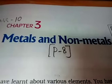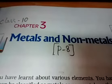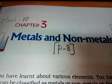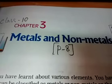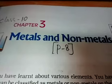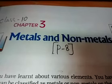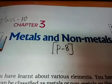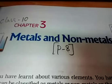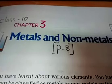The third common example is iron rusting. Iron, when exposed to moist air for a long time, acquires a coating of a brown flaky substance called rust. When a metal is attacked by substances around it such as moisture, acid, etc., it is said to corrode, and this process is called corrosion.